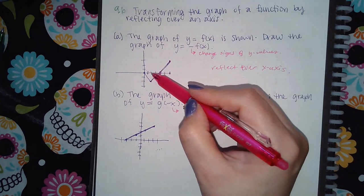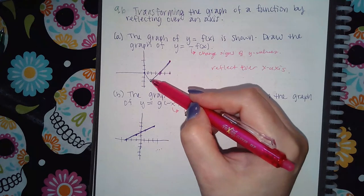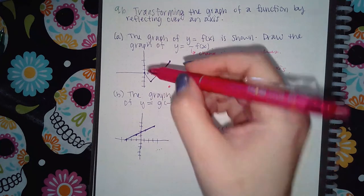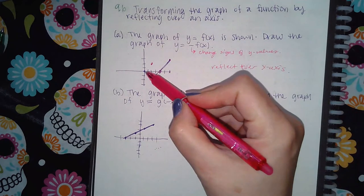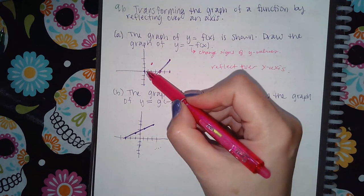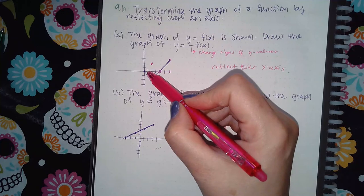Here we have the point 2 and negative 2, so if I change the sign of the y value, it becomes 2 and positive 2. This point is 0, 0. If I change the sign of the y value, 0 is still 0.